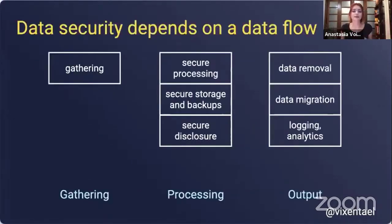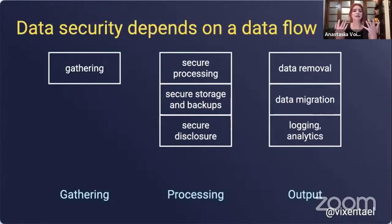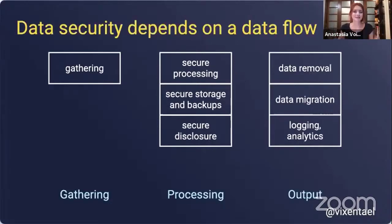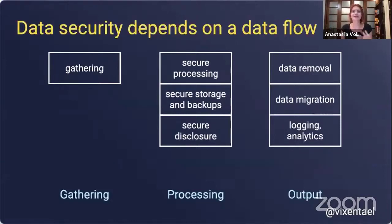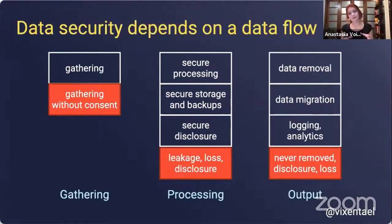Every data flow, even in a simplified form, has only a couple of steps: data gathering — where data is gathered, what the user input is, or data generated or derived from; data processing — how data is processed, all the calculations and analytics, how you store and backup the data, how you send it to others — ideally with authenticated users; and data output. This is a tricky part because the data should be removed at some point, data might be migrated to different databases, and of course we have third-party tools we push data into — log analytics, CRMs, BI tools, and so on. On every step of this simplified data flow, trouble might happen.